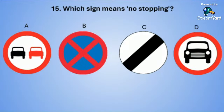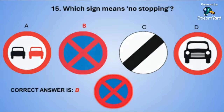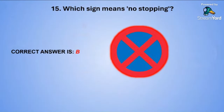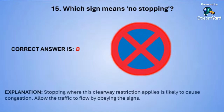Which is sign B. Stopping where this clearway restriction applies is likely to cause congestion. Allow the traffic to flow by obeying the signs.